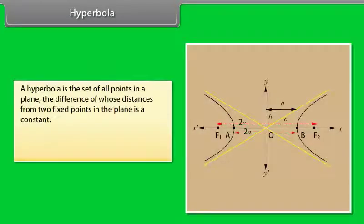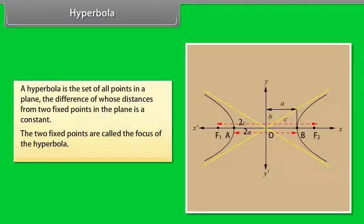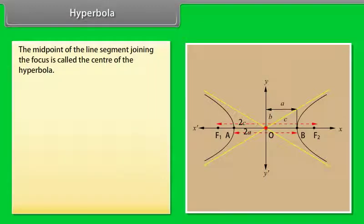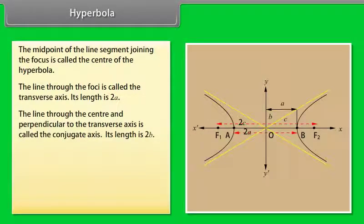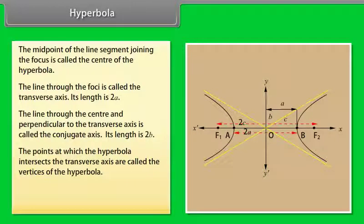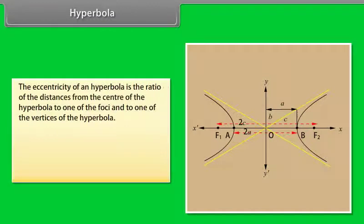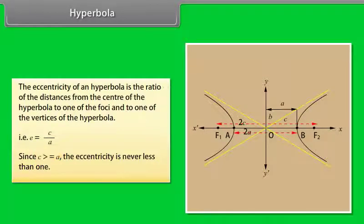Hyperbola. A hyperbola is the set of all points in a plane, the difference of whose distances from two fixed points in the plane is a constant. The two fixed points are called the foci of the hyperbola. The midpoint of the line segment joining the foci is called the center. The line through the foci is called the transverse axis; its length is 2a. The line through the center perpendicular to the transverse axis is called the conjugate axis; its length is 2b. The points at which the hyperbola intersects the transverse axis are called the vertices. The distance between the foci is 2c. The eccentricity is e = c/a. Since c ≥ a, the eccentricity is never less than 1.